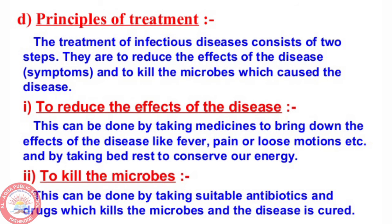Next are the principles of treatment — the different steps we follow to treat a particular disease. Treatment may involve two steps: one is to reduce the effects of the disease, and the other is to kill the microbes which caused the disease. To reduce the effects means to reduce the symptoms. This can be done by taking medicines to bring down symptoms like fever, pain, or loose motions, and by taking bed rest to conserve energy. The second step is to kill the microbes by taking suitable antibiotics and drugs, which kills the microbes and the disease is cured.